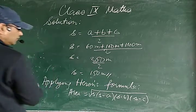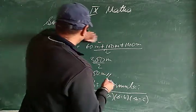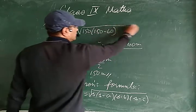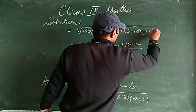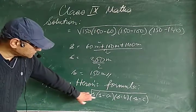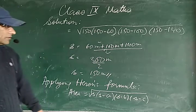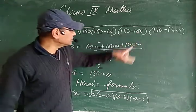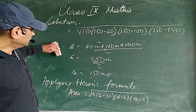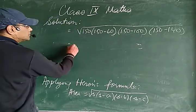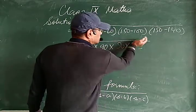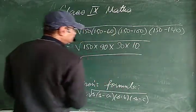Applying Heron's formula: Area = √(s × (s−a) × (s−b) × (s−c)) = √(150 × (150−60) × (150−100) × (150−140)) = √(150 × 90 × 50 × 10).